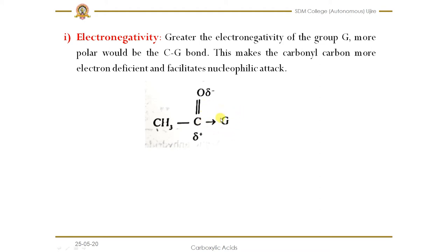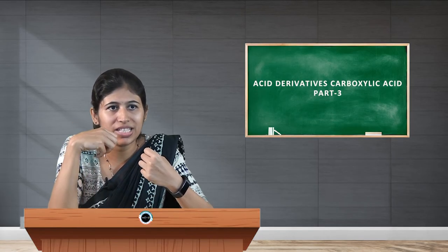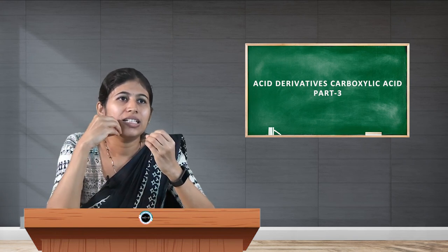The first factor is electronegativity. The G groups are functional groups like halogens, esters, anhydrides, and amides. If G has greater electronegativity — for example, if G is a halogen — halogens are highly electronegative and pull the bonded pair of electrons towards themselves. As a result, this carbon becomes electron deficient, which facilitates nucleophilic attack, and this bond breaks very easily.